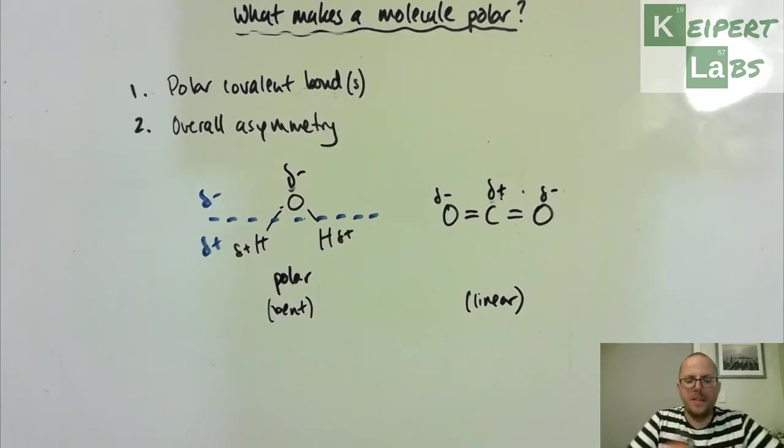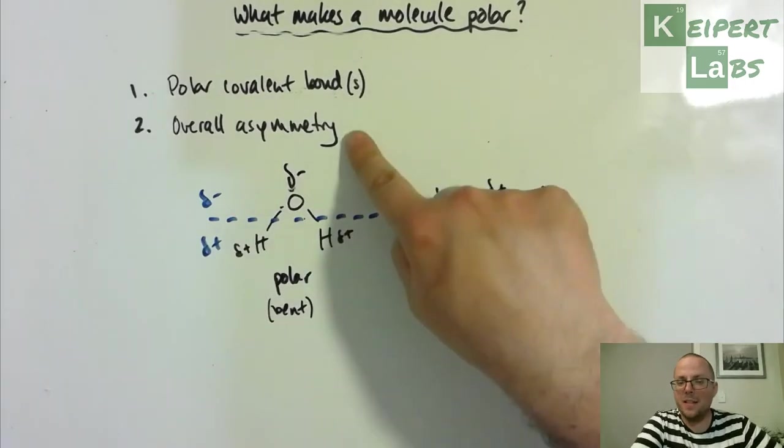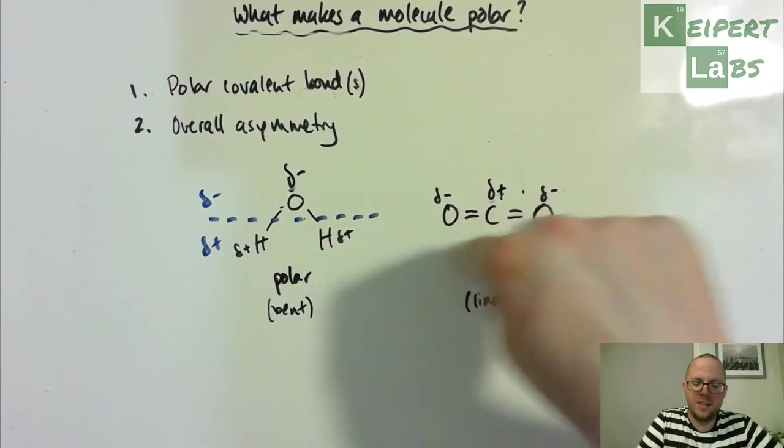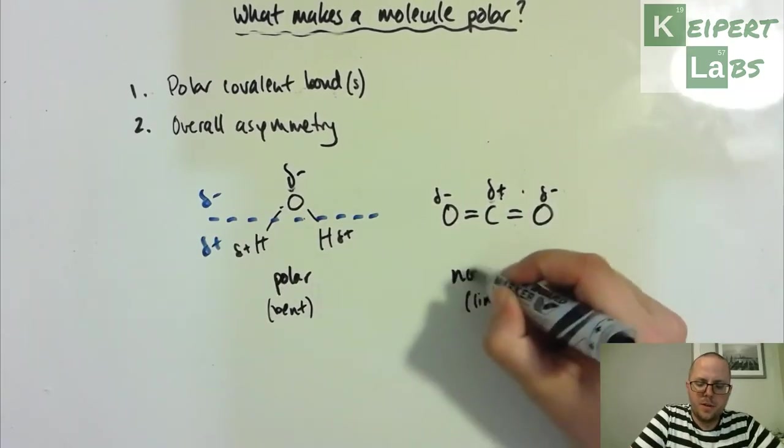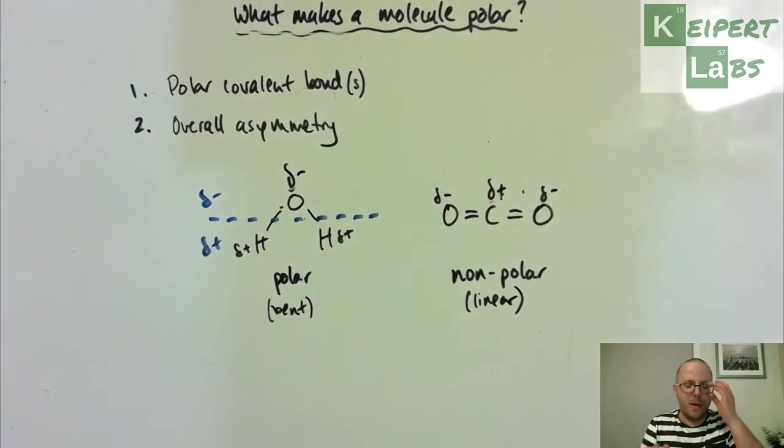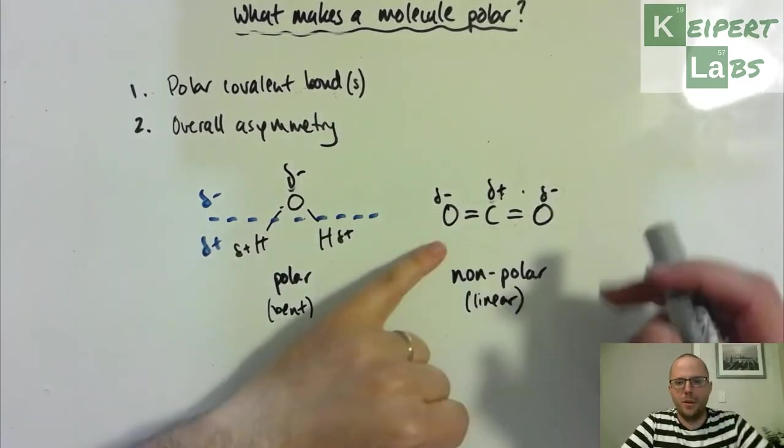What that means is that yes, it ticks the first box, but it doesn't tick the second box. These polar bonds kind of cancel each other out. So carbon dioxide is a non-polar molecule, because those electrons, we don't have that asymmetry.